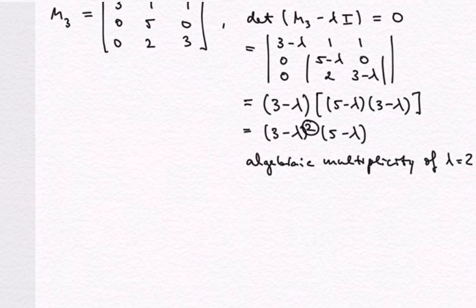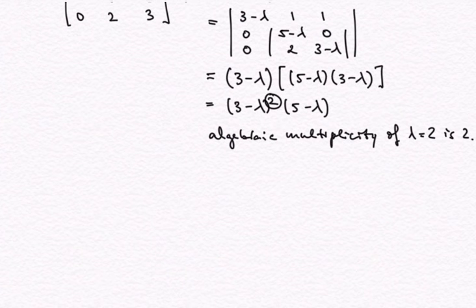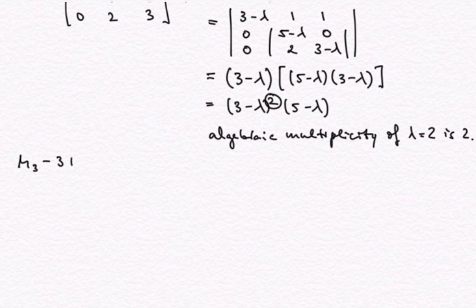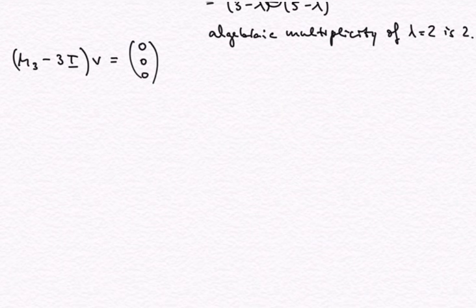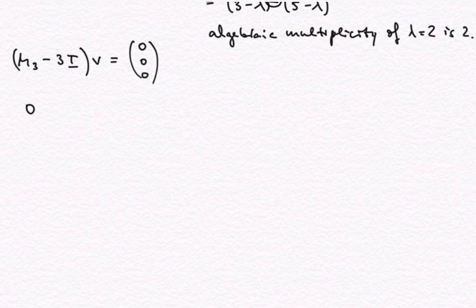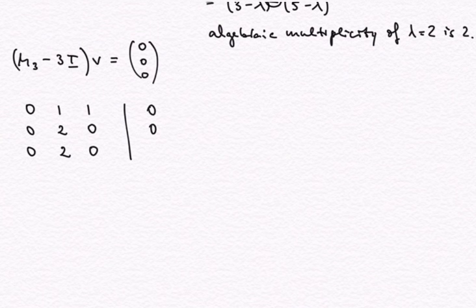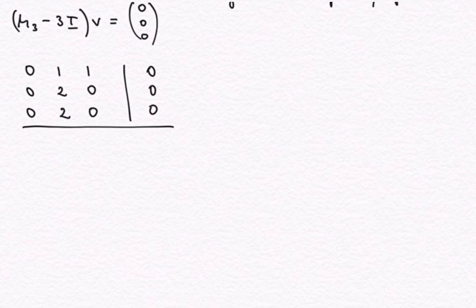So let's find the corresponding eigenvectors. I need to solve the system (M3 minus lambda times I) times vector v equals the zero vector in R3. For the first eigenvalue lambda equals 3, M3 minus 3I gives the matrix: 0, 1, 1; 0, 2, 0; 0, 2, 0. This needs to result in the zero vector on the right-hand side.